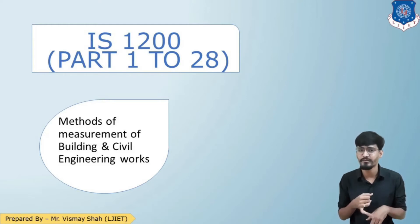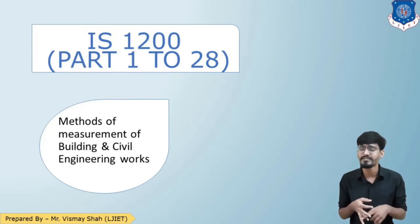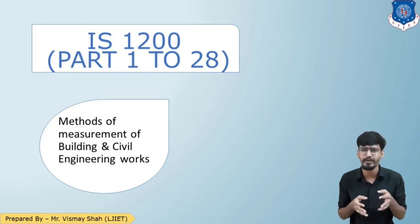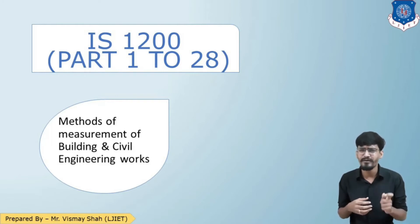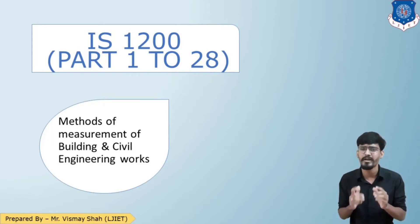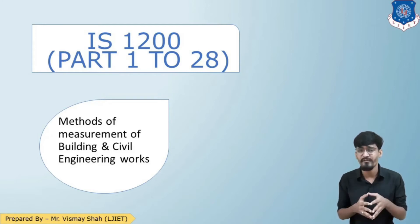IS 1200 has many parts: Part 1 is for earthwork and excavation, Part 2 for foundation concrete, Part 3 for brickwork, Part 4 for formwork, Part 5 for plastering and pointing, Part 18 for demolition, Part 23 for piling work, and more. Every item of work you can imagine has an IS code within IS 1200 parts 1 to 28. If you need soft copies of these IS codes, you can contact me.